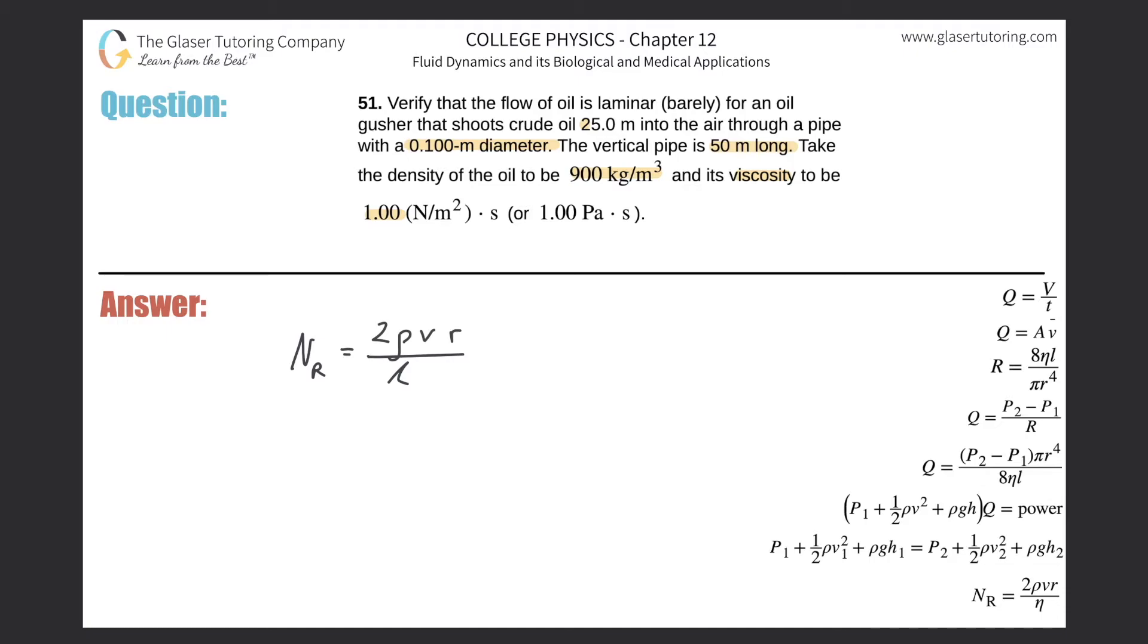So the Reynolds number here, I'm going to substitute that in. This is 2 multiplied by the density of the oil, multiplied by the square root of 2 times gravity times the height that the oil reached, multiplied by the radius of the tube, all divided by the viscosity.